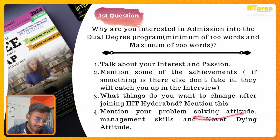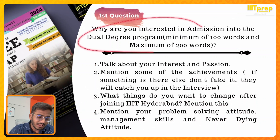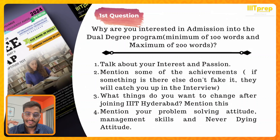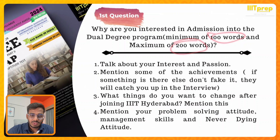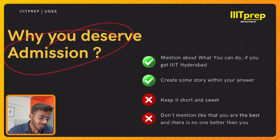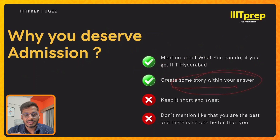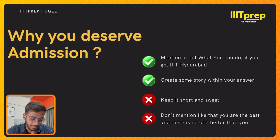Make sure your answer reflects a problem-solving attitude, management skills, and a never-give-up attitude. The simple answer is: you need to build a story. Don't put your answer directly like listing out reasons. Try to build a story — keep it short, not too long. Also mention why you deserve the college and what you can do if you get there. If you have a story, even if some interview questions go wrong, you will recover. Please refer to the PDF in the course for sample answers.